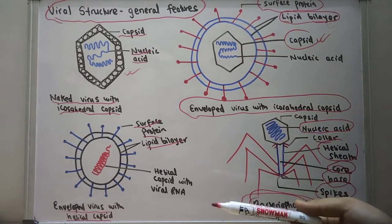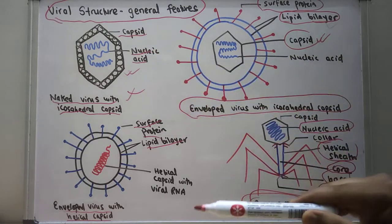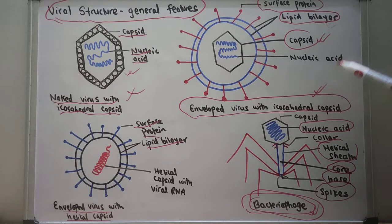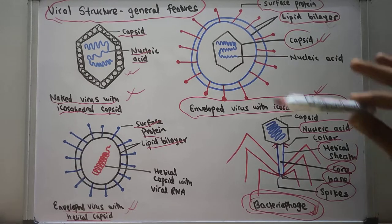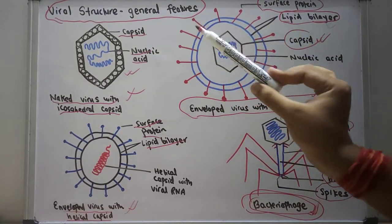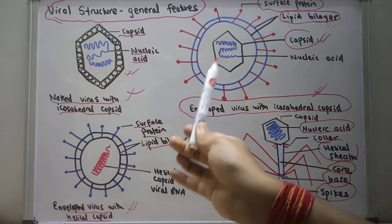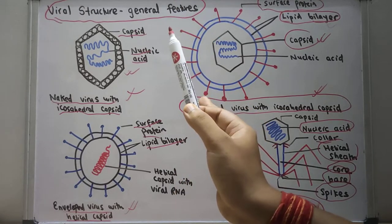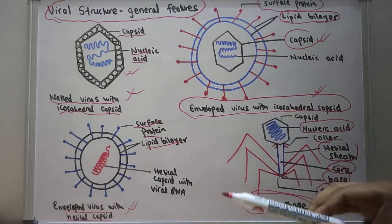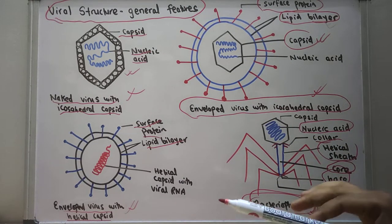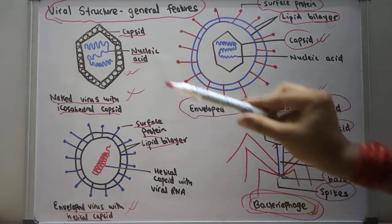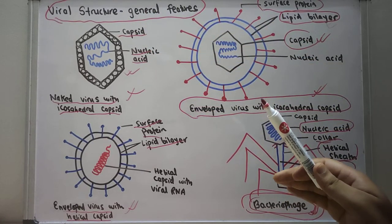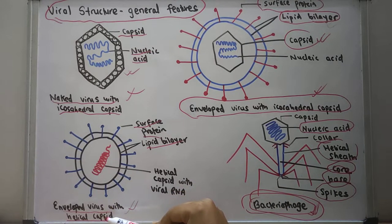So this is all about the general features of the virus structure. We have talked about the naked virus with icosahedral capsid, the enveloped virus with icosahedral capsid, the enveloped virus with helical capsid, and the general features of the bacteriophage. You really have to know that if the viral capsid is surrounded by the lipid bilayer then it is enveloped, and if it is not surrounded by the lipid bilayer then it is the naked virus. The structure of the capsid determines its shape — if the capsid is icosahedral it is called icosahedral capsid, and if it is helical we call it helical capsid.